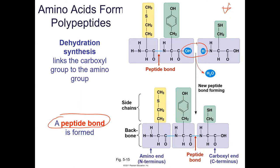I want to point out some terminology about peptide structure. Looking at our peptide, we have the amino group at one end — it has a nitrogen — so it's called the N-terminus, the beginning of the peptide chain. On the other end we have the carboxylic acid, which has a carbon, so it's called the C-terminus, the end of the amino acid chain. In peptide language, we read from the N-terminus to the C-terminus, just like reading left to right in English.